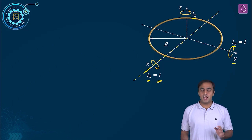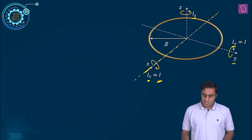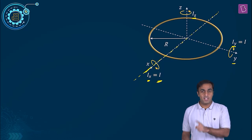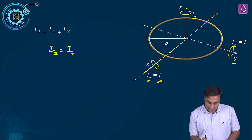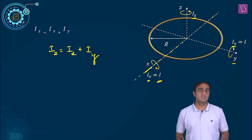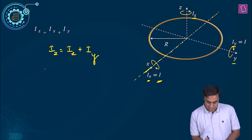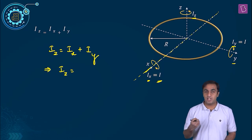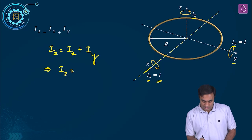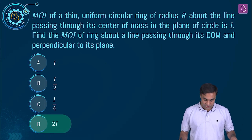In other words, what we are given is Ix and Iy value. Perpendicular axis theorem says that Iz equals Ix plus Iy. We know Ix and Iy are simply equal to I in magnitude. So Iz, which is the required moment of inertia about the axis perpendicular to the plane of the ring passing through its center, happens to be 2 times I. The correct option for this question is D.